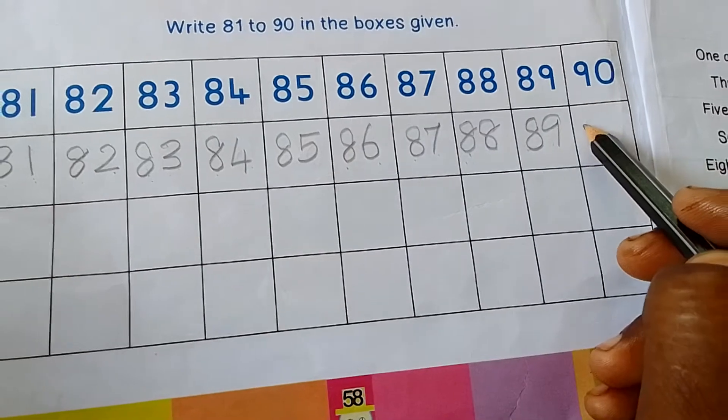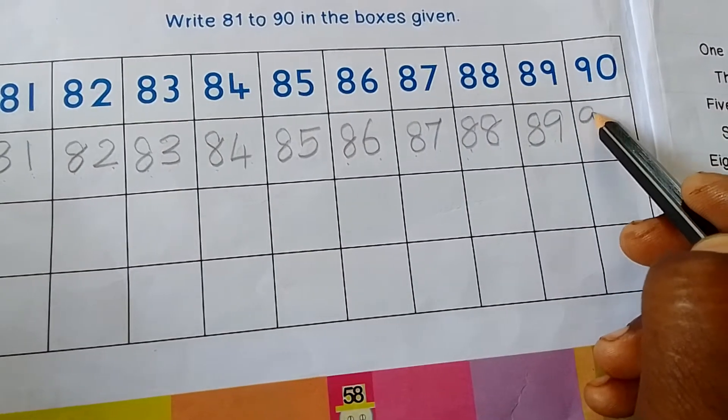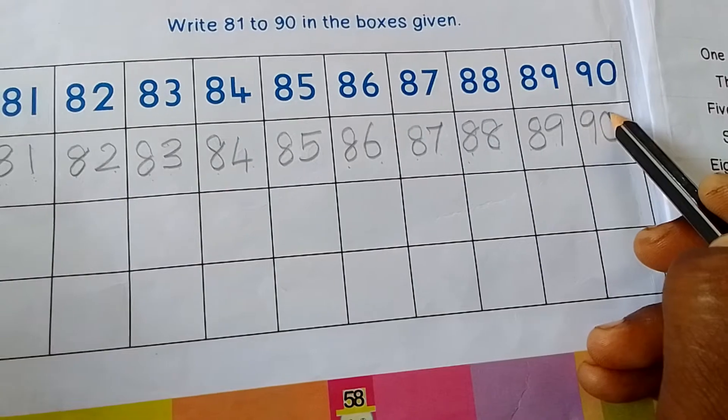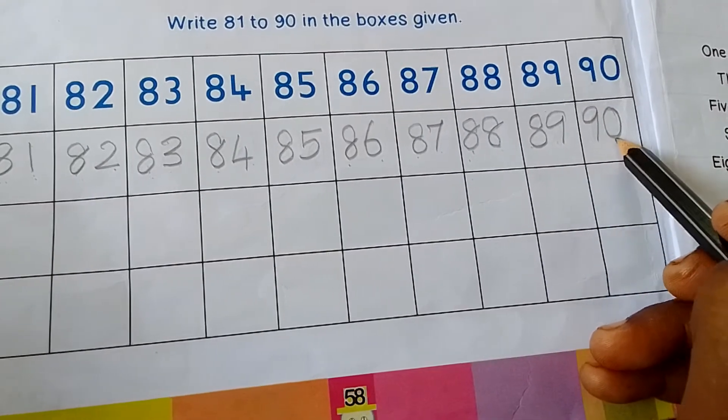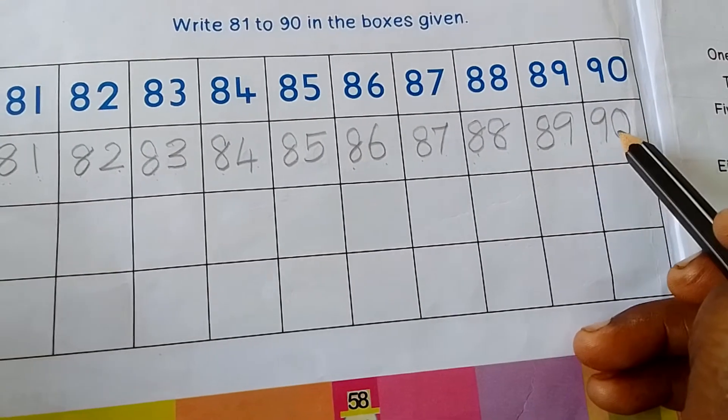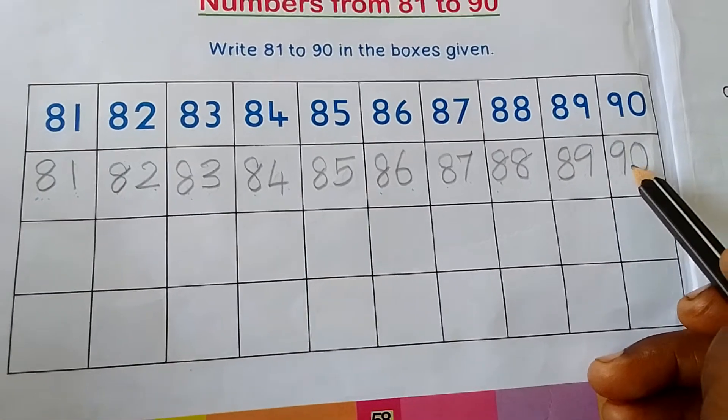Then we write number 90, 9, 0, 9, 0. How to read this number? 90.